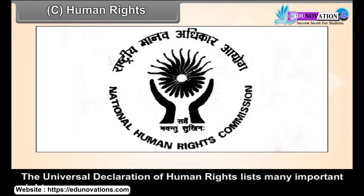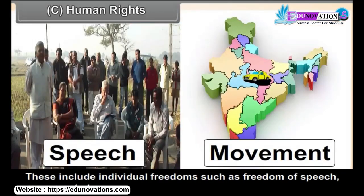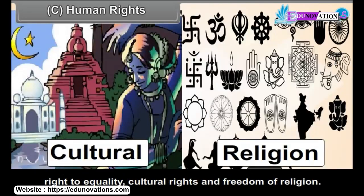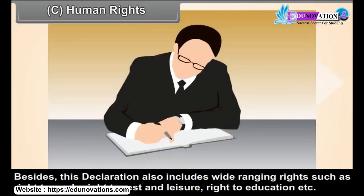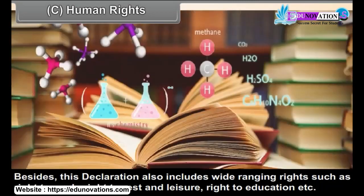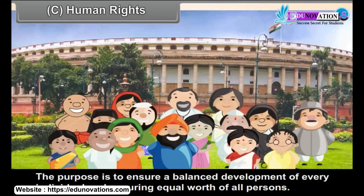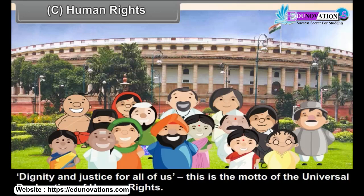The Universal Declaration of Human Rights lists many important rights. These include individual freedoms such as freedom of speech, movement, etc., right to equality, cultural rights, and freedom of religion. Besides this, the declaration also includes wide-ranging rights such as right to work, right to rest and leisure, and right to education. The purpose is to ensure a balanced development of every individual and ensuring equal worth of all persons. 'Dignity and justice for all of us' — this is the motto of the Universal Declaration of Human Rights.